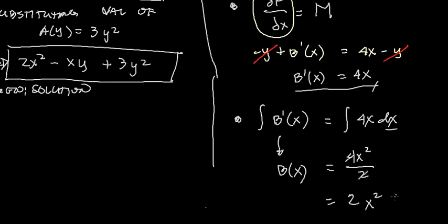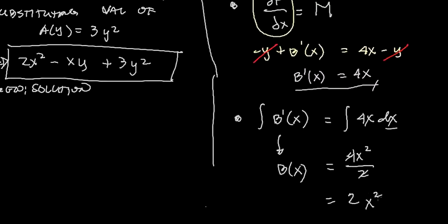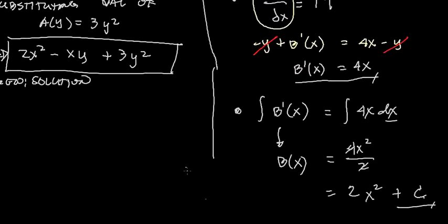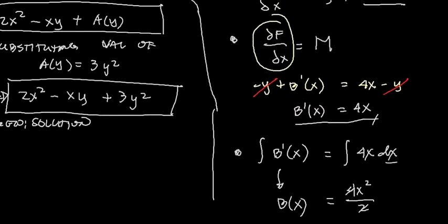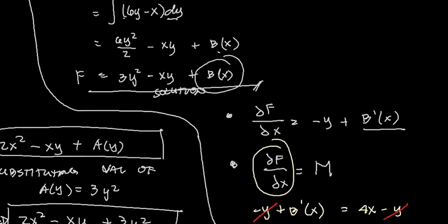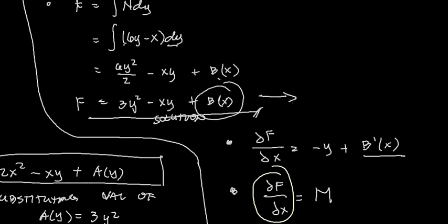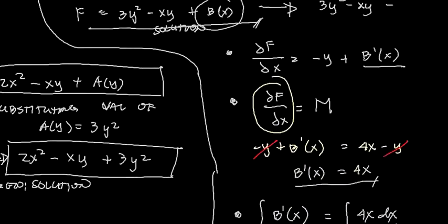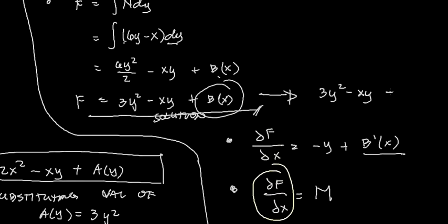So this is 2x². By the way, we need to add another constant of integration. So our b(x) is 2x² + c. Then substituting this value in our step 3, we have 3y² - xy + 2x² + c equals c.